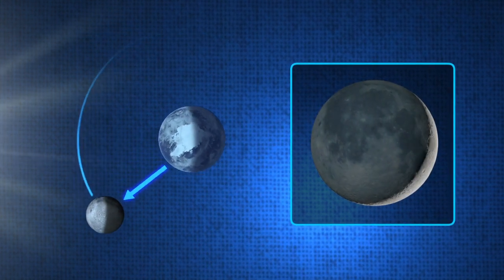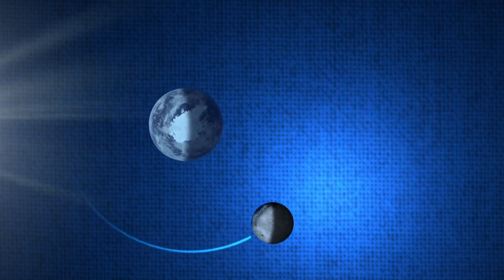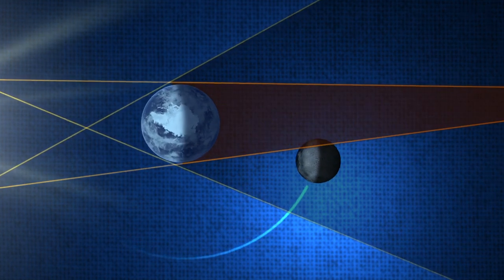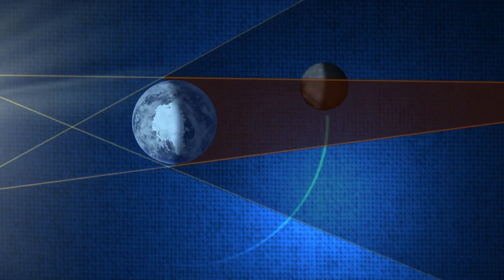At least twice a year, however, something quite different happens. The Moon passes through the shadow cast by the Earth, causing it to look extremely unusual for a short period of time.